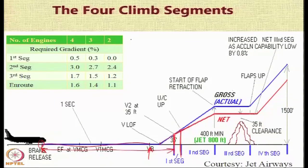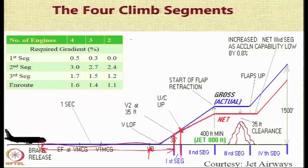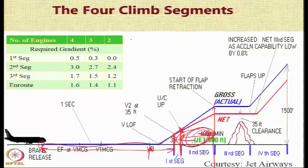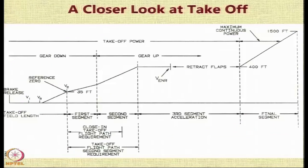The first segment begins after clearing the obstacle height, during which the landing gear is being retracted. In the second segment, the landing gear is retracted but the flaps are still deployed and being slowly retracted. This second segment is the one with an important regulatory requirement, and we will examine the climb gradient requirement during this segment. In this segment, the landing gear is up and the flaps are still in the process of being retracted.